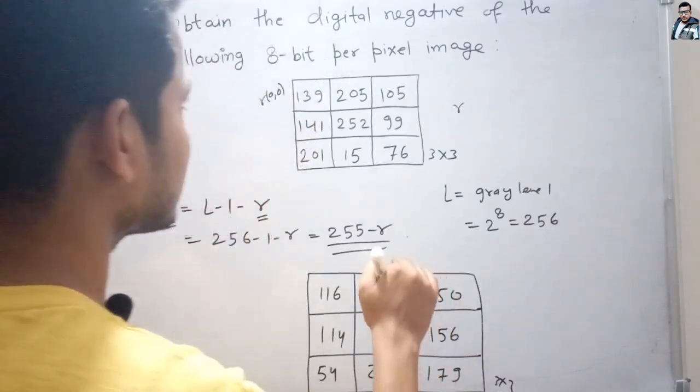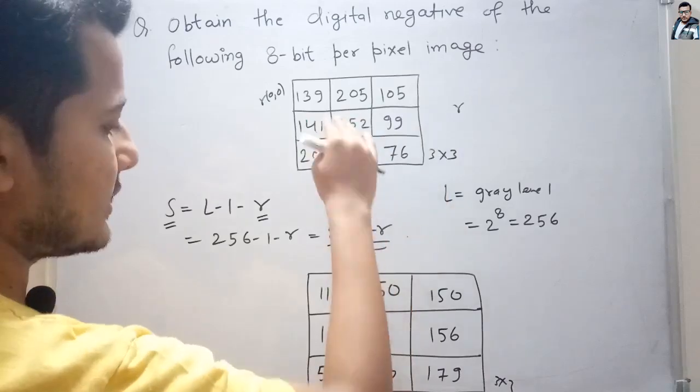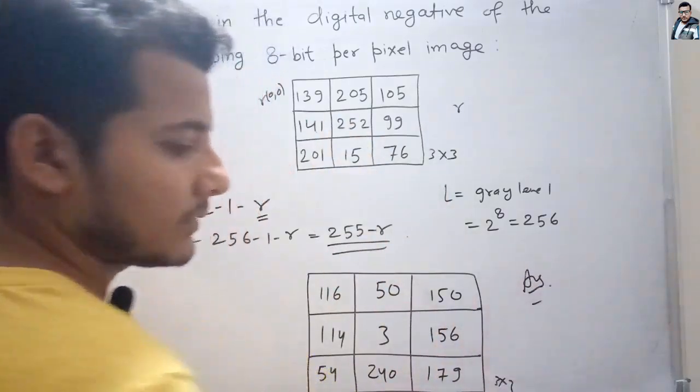This resulting matrix is the digital negative of the original image. Thank you, friends.